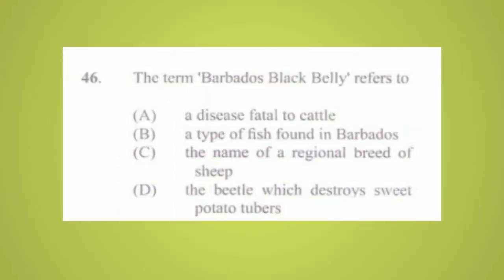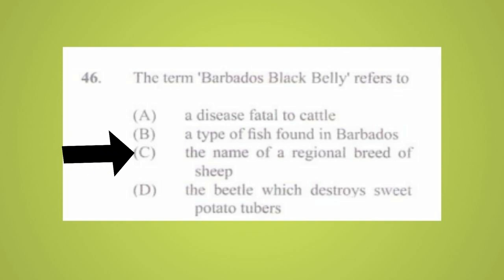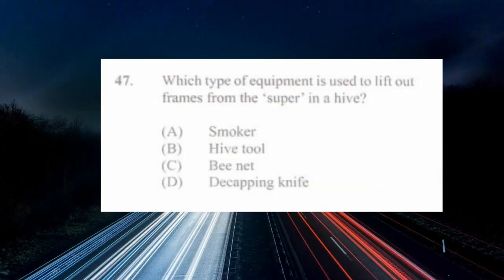Question number forty-six: the term Barbados Black Belly refers to a) a disease fatal to cattle, b) a type of fish found in Barbados, c) the name of a regional breed of sheep, d) the beetle which destroys sweet potato tuber. The answer is c) the name of a regional breed of sheep.